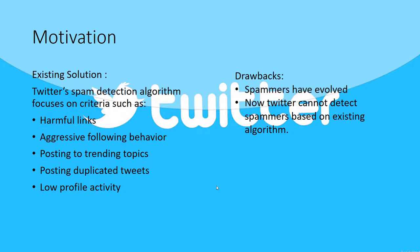Twitter already has a spam detection algorithm that focuses on criteria such as harmful links, aggressive following behavior, posting to trending topics, posting duplicated tweets, and low profile activity. But the problem is that spammers are clever and have already evolved from these techniques, so they now know how to avoid Twitter's detection algorithm.